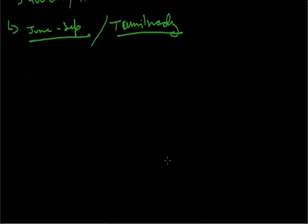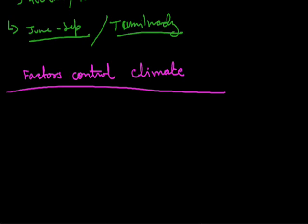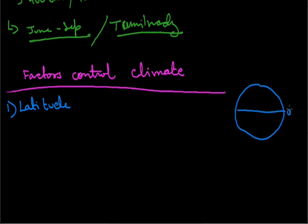Now, what are the factors which control climate? The first factor is latitude. In low latitude areas, direct sun rays cause very high temperatures. While in high latitude areas, the temperature is very low, and in polar areas the land is covered with ice. So latitude controls the climate depending on where a particular place is located.